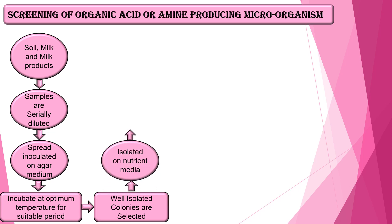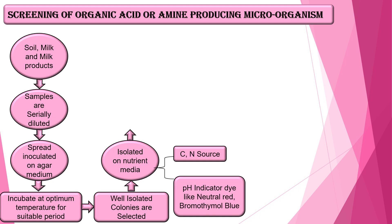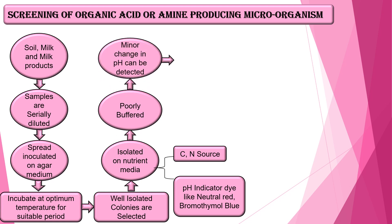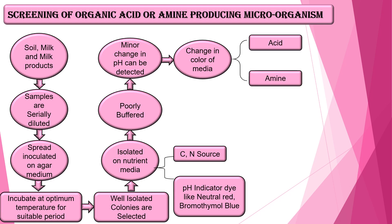After incubation, well-isolated colonies are selected and re-isolated on nutrient media. This nutrient media should fulfill all nutrient requirements of the microorganism — providing carbon and nitrogen sources — and should contain a pH indicator dye like neutral red or bromothymol blue. The medium should also be poorly buffered, because a minor change in pH can then be detected easily. The change in color of the media determines whether acid or amine is produced.